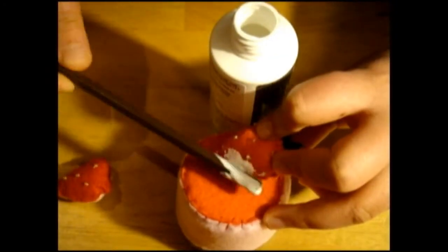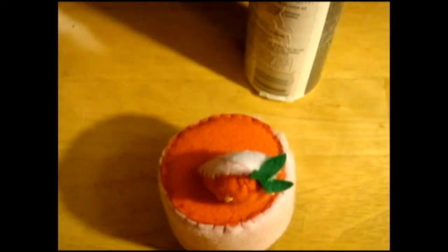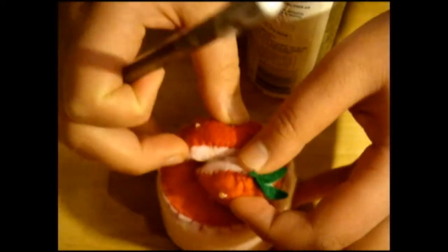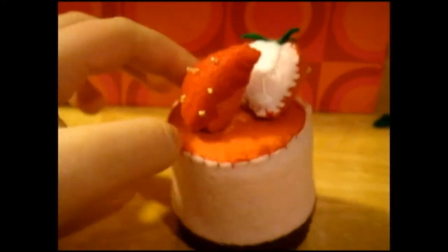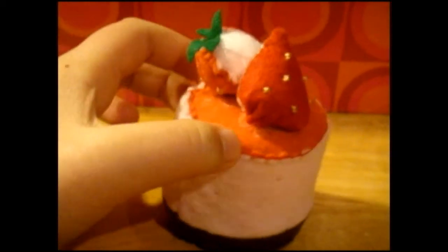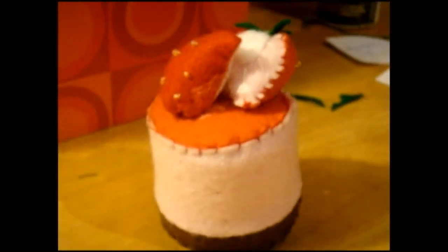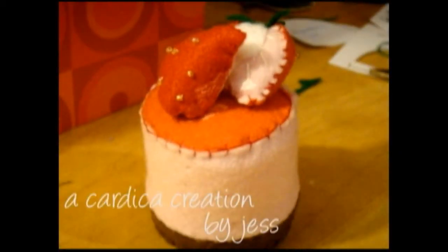Once you're done, we're going to... I made two, by the way. Put the strawberry on the mousse using PVA glue, or craft glue. So I organize my two strawberries and put them on. But glue isn't strong enough, so I actually sewed them on afterwards. Once you're done, it should look like this. Voila! This was a Cardi Crore creation by Jess. Strawberry mousse!